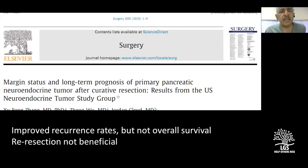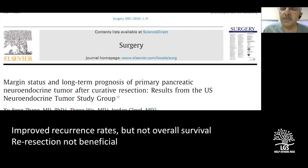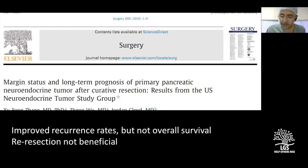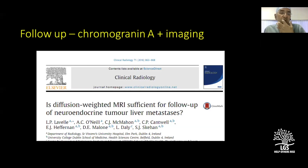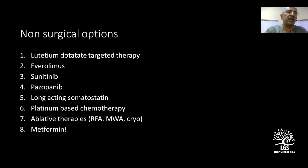Regarding R0 resection in NETs, while R0 is generally desirable, one study found that margin-positive patients had higher recurrence rates but no difference in overall survival, and re-resection of a positive margin was not beneficial. For surveillance, three-to-six monthly scans and chromogranin A testing are standard, with CT, MRI, or DOTA scans when required. Diffusion-weighted MRI may be one of the best surveillance methods, with the advantage of no radiation.